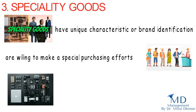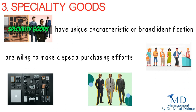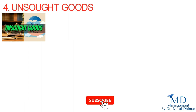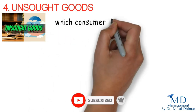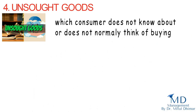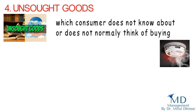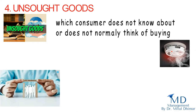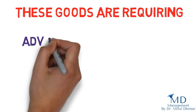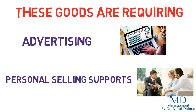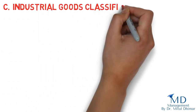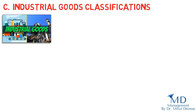Number three: specialty goods, requiring purchasing efforts, for example photographic equipment and men's suits. Number four: unsought goods. Unsought goods are those goods which the consumer does not know about or does not normally think of buying, such as smoke detectors, life insurance, and reference books. These goods require advertising and personal selling support.